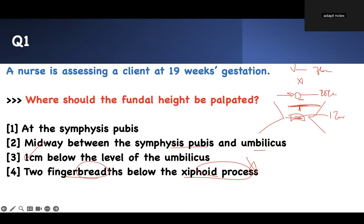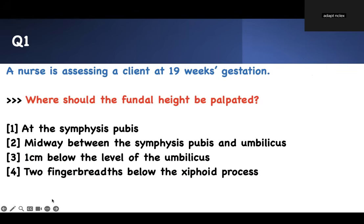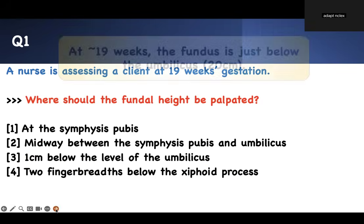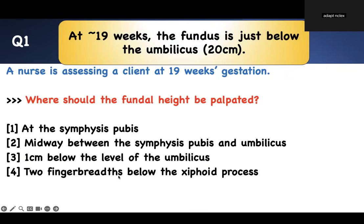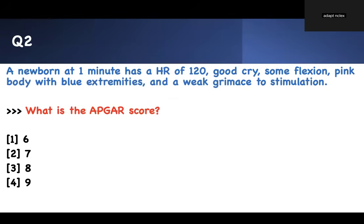Write this down, take it with you, and use it whenever you get a question. At 19 weeks, the fundus is just below the umbilicus. The right answer is one centimeter below the level of the umbilicus.